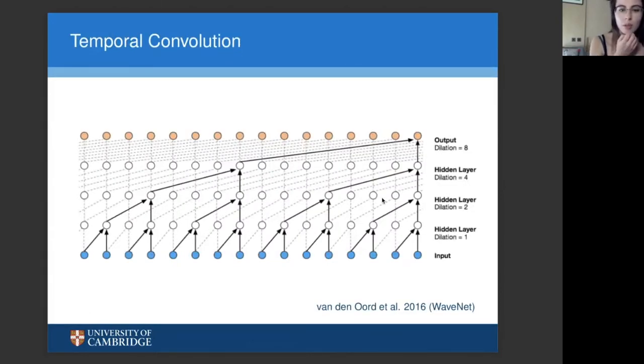So, on to the methods that we're using then. This is another neural network that I was showing before. In this case, the blue dots on the bottom are representing our time series input.